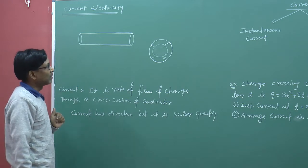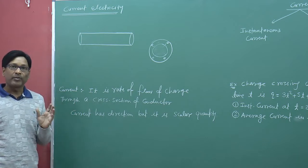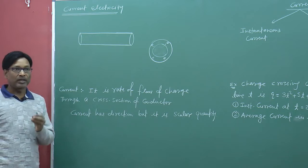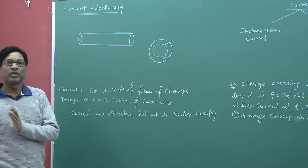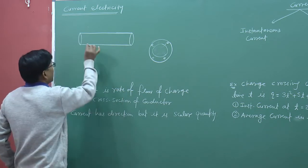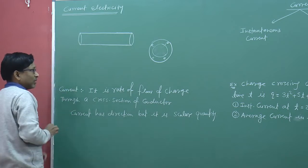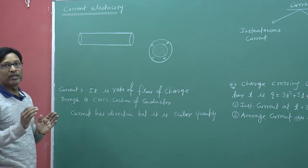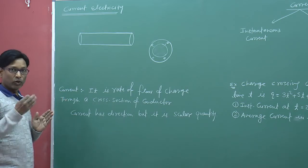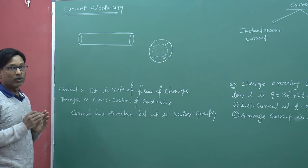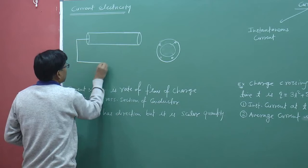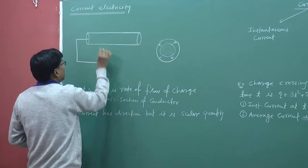Generally, we know that charge always flows from high potential to low potential. If we talk about positive charge, then the charge always flows from high potential to low potential. So, for the charge to flow, we need to create a potential difference — one point is at high potential and another point is at low potential, then the current will flow.